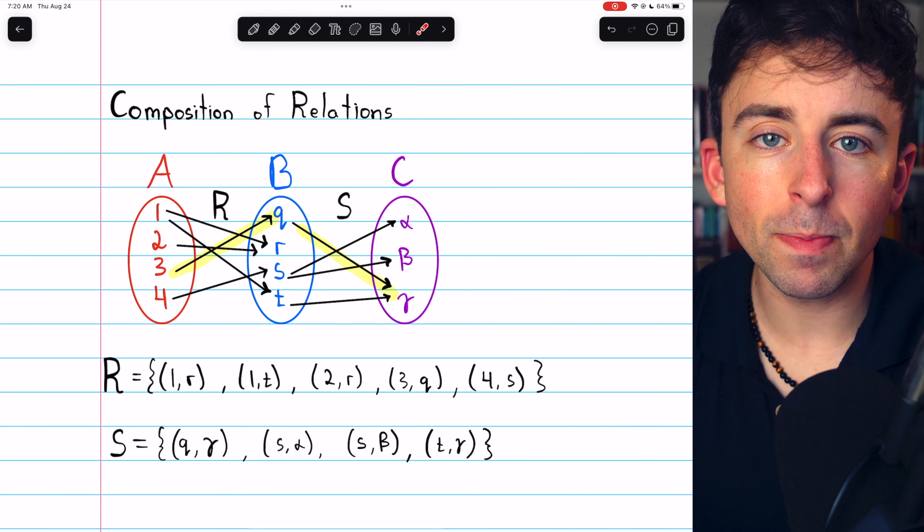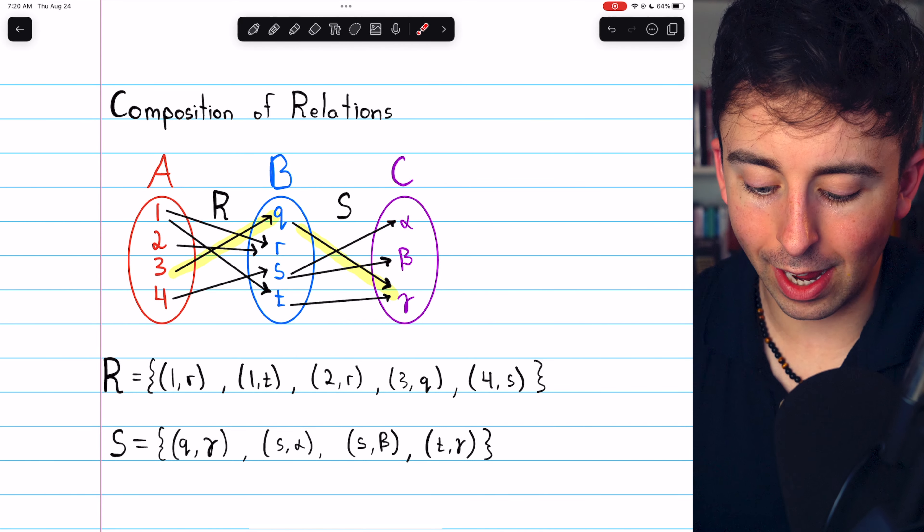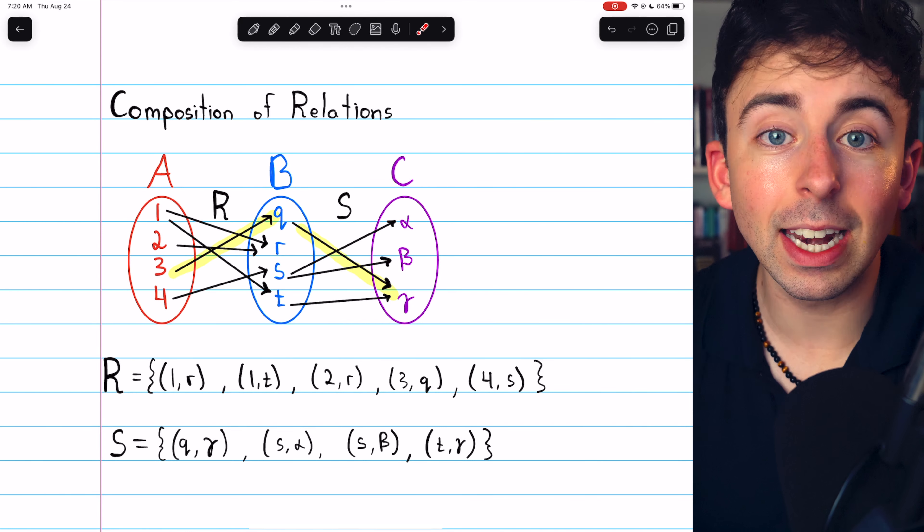In plain language, the elements relate from A to C, if there's a connection between them, given these two relations.